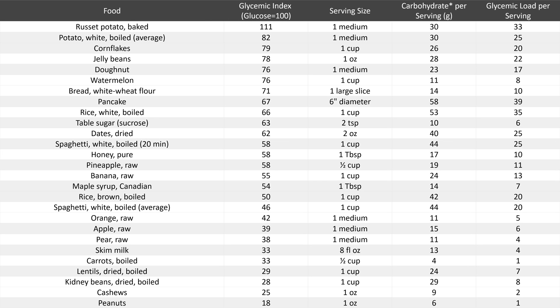These are the values of Glycemic Index and Glycemic Load for various food items. Notably, baked Russet potato has a Glycemic Index of 111, which is even higher than pure glucose. Peanuts have the lowest Glycemic Index, and both peanuts and boiled carrots have low Glycemic Load.